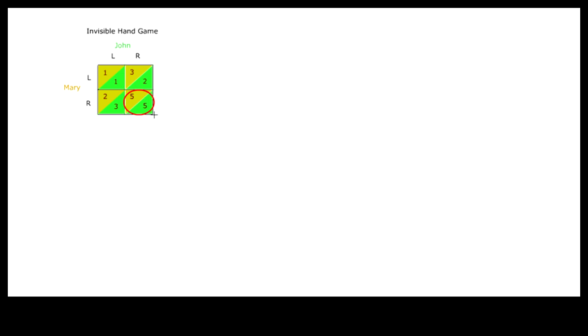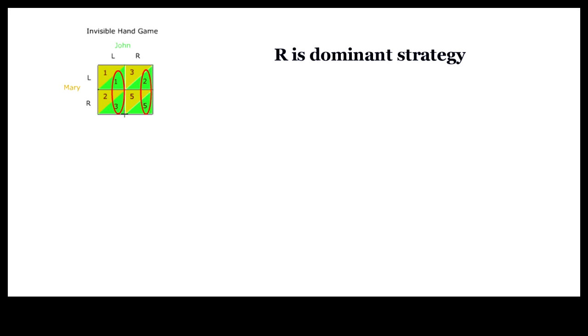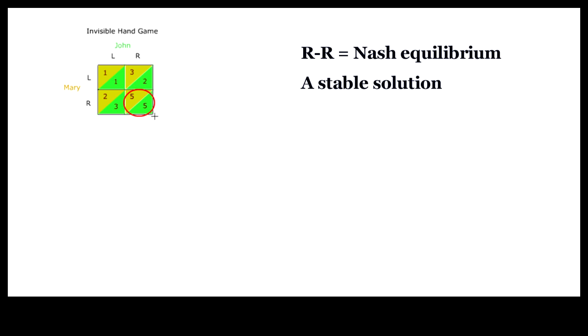John and Mary can always end up in this choice pair as long as they head for R, and each can depend on the other to do so, because the payoff for choosing R always trumps the payoff for choosing L. For Mary, the payoff for R is always greater than the payoff for L. In other words, R is the dominant strategy, and R-R is a stable solution from which nobody has any incentive to defect. It is technically known as a Nash equilibrium.